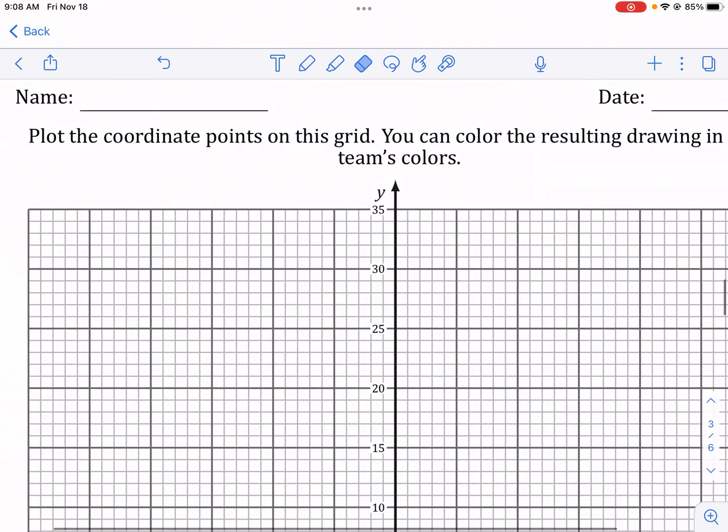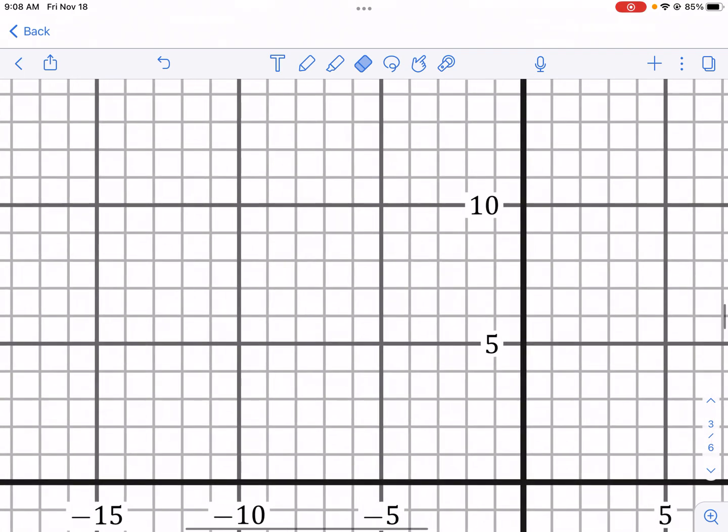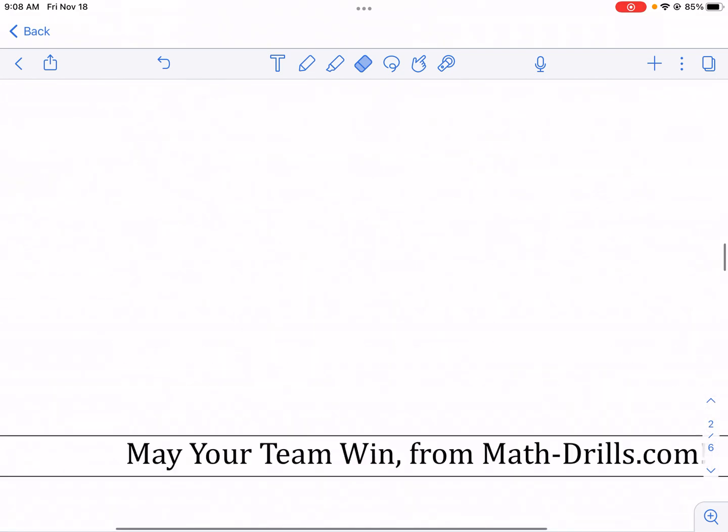So let's go down here. This is our coordinate plane and we're gonna plot that point. So negative 10 for the X and then there's a positive 10 for the Y. We're gonna see where they meet and we're gonna put a point right there. So you can see I put a point right there and that's my first one.